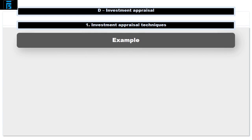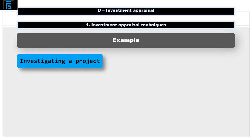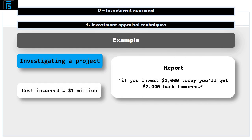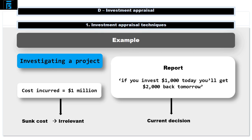For example, suppose I commission an investigation into a project, and that investigation cost me one million dollars. When I read the report, it says: if you invest a thousand dollars today, you'll get two thousand dollars back tomorrow. Am I upset that I've paid one million dollars for this advice? You bet I am. But does that mean I don't invest a thousand dollars today to get two thousand back tomorrow? I can't change the fact the report has cost me a million dollars, so the cost of the report is irrelevant to the decision. The only decision we face is whether or not to invest a thousand dollars today to get two thousand dollars back tomorrow. A hundred percent return in twenty-four hours sounds pretty good to me.